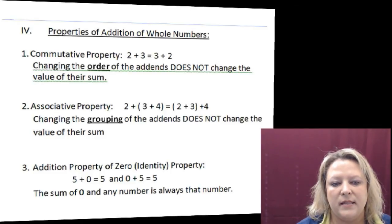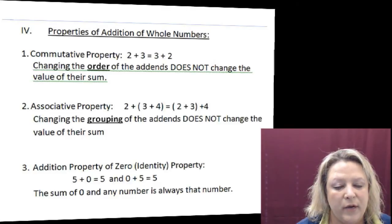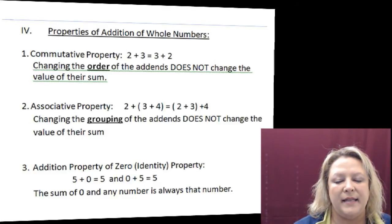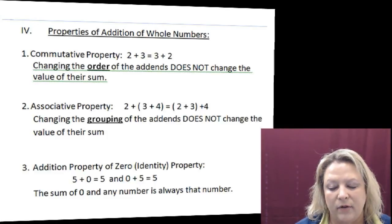Another property of addition is 0. Any time that you have a number and you add nothing to it, you still have that number. And we call that the addition identity or the additive property of 0 because you are not changing the value of the number by adding 0 to it.